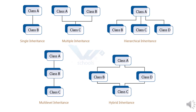In multiple inheritance, a class C is inherited from both class A and class B — that means a class is derived from more than one base class. Such kind of inheritance is called multiple inheritance.